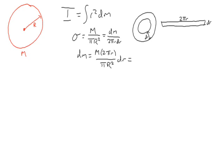So dm equals 2 pi r little r over pi r squared times m dr. Simplifying by canceling the pis gives 2 r m over r squared dr. We can substitute this back into the integral. So I equals integral, evaluated from 0 to r, r squared times 2 r m over r squared dr.